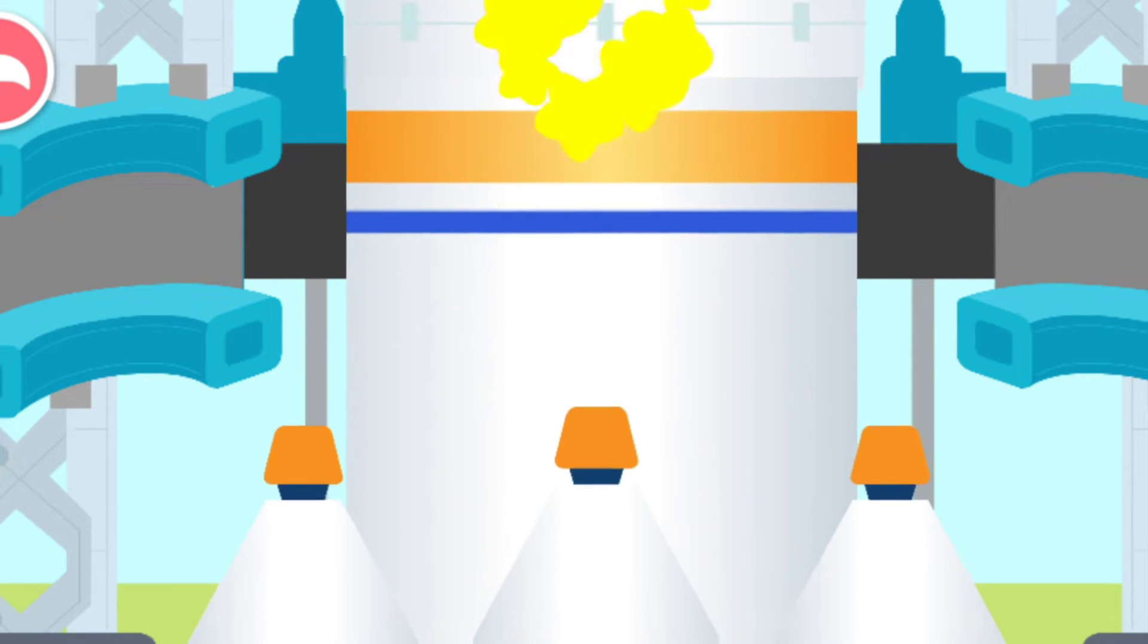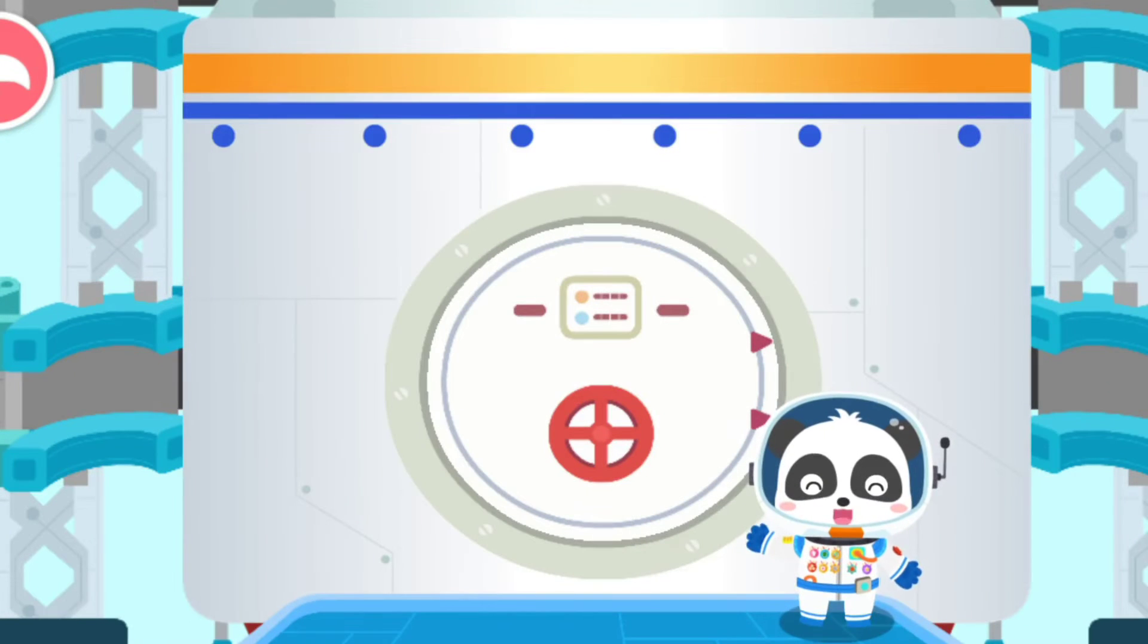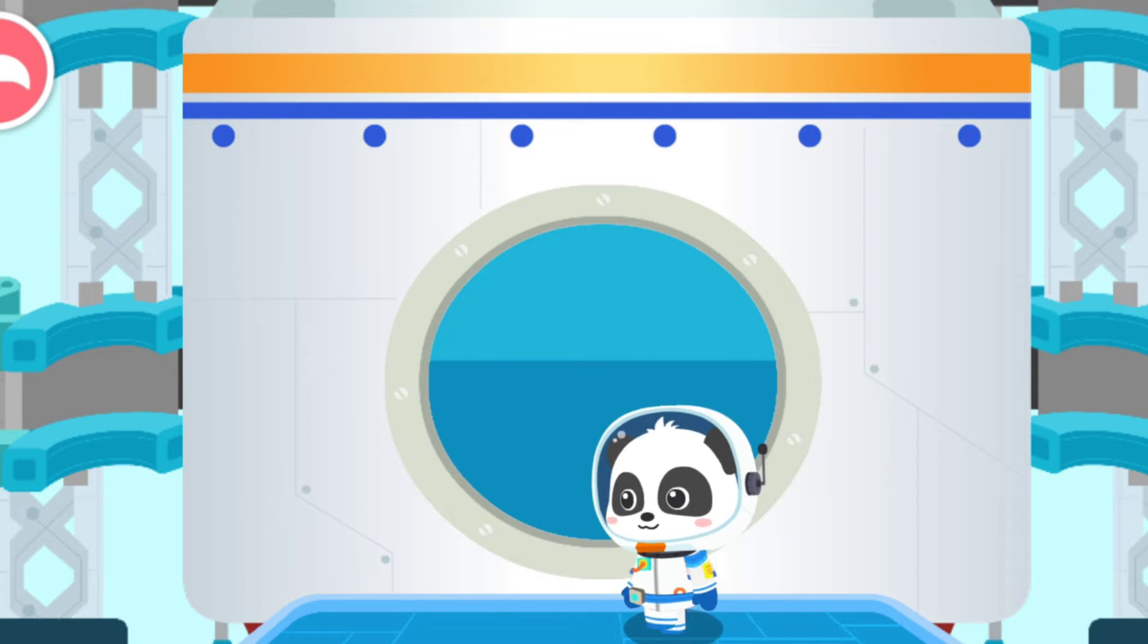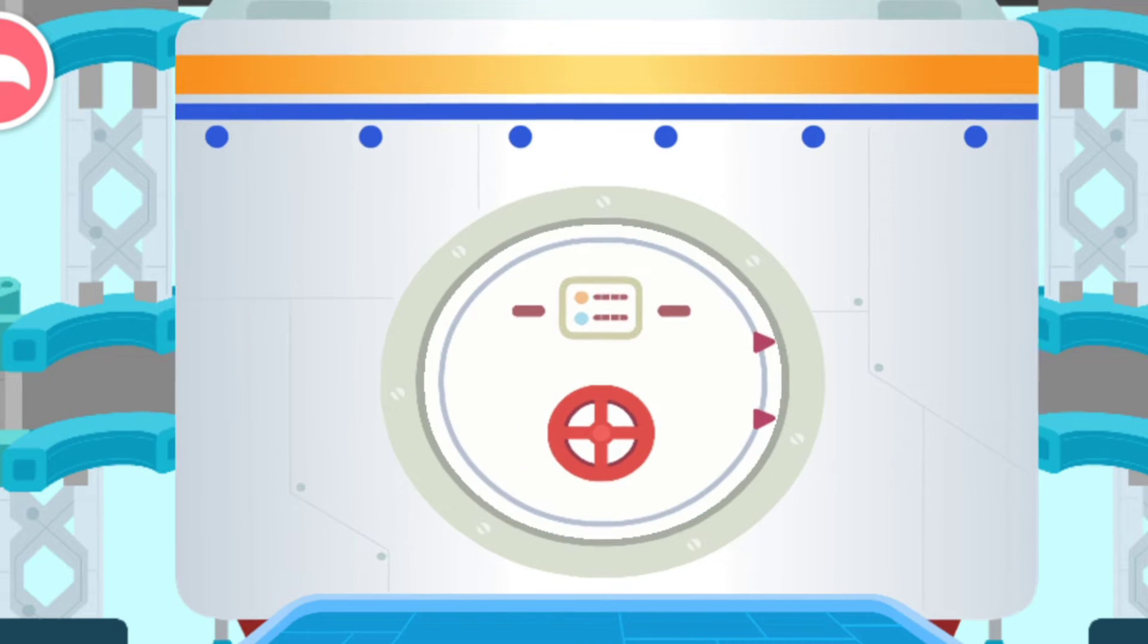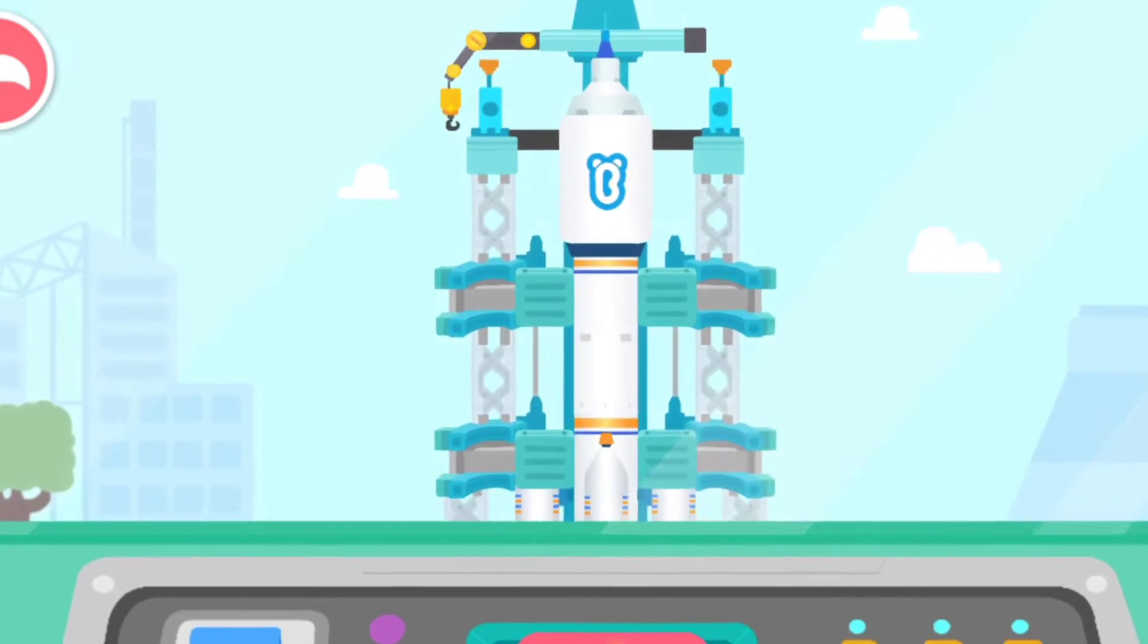The rocket is made up of multiple thrusters, which will fall off automatically when they are exhausted. Are you ready? Let's head for the space! Press the button and launch the rocket.